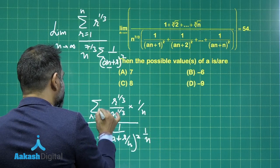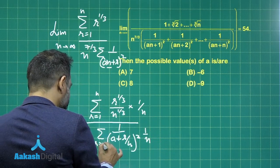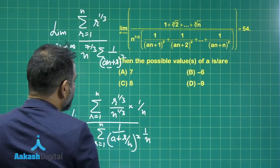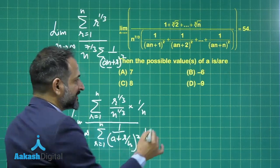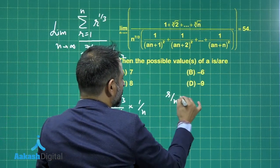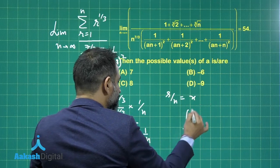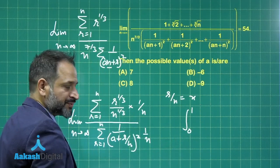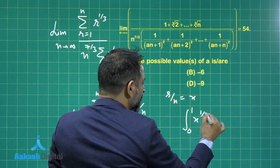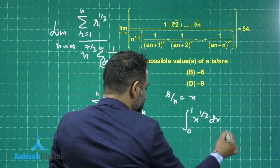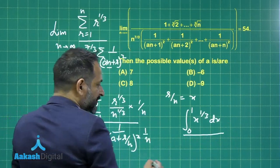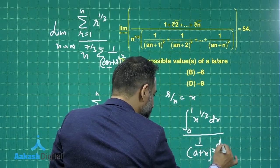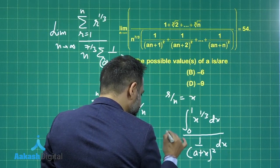Here r is going from 1 to n in both parts, and the limit is n tending to infinity. Now, if we replace r/n with x, this will be the integral from 0 to 1, because r is going from 1 to n, so 1/n will be tending to 0 to 1. This gives x raised to the power 1/3 dx in the numerator and 1 upon (a + x) whole square dx in the denominator, again from 0 to 1.